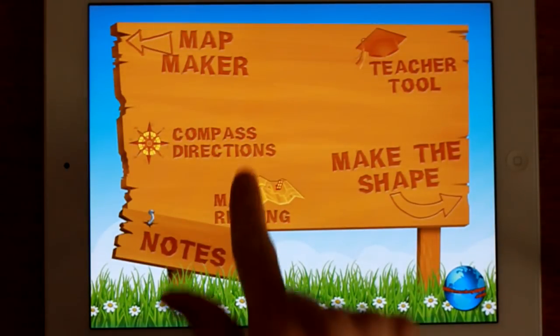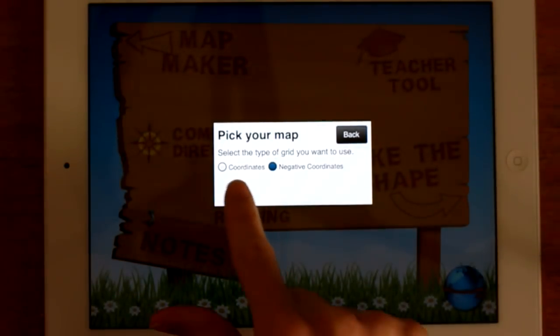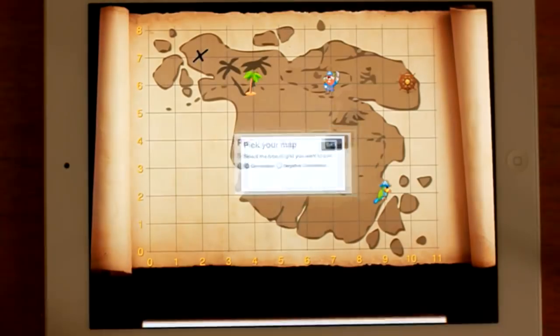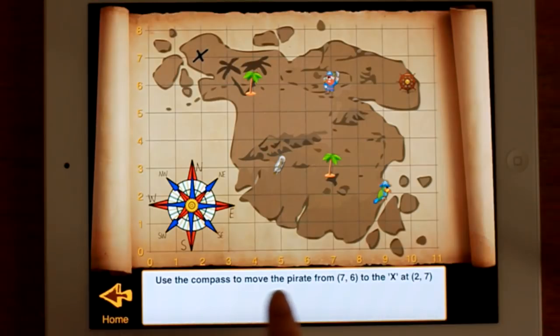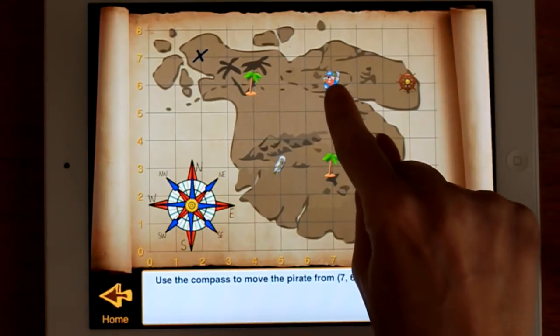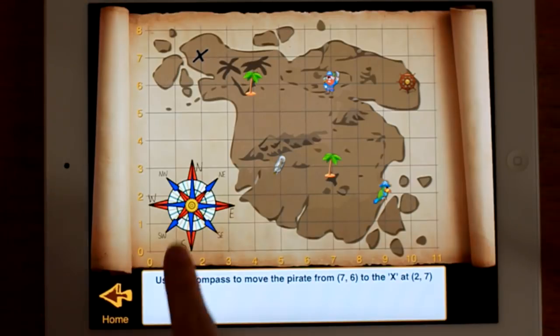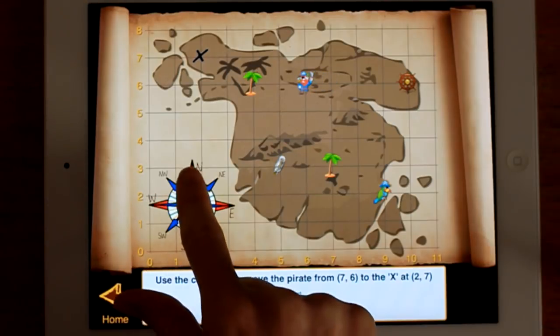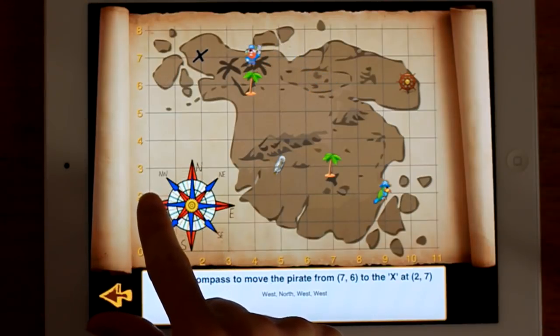Let's have a look quickly at compass directions. So you can choose coordinates or negative coordinates. Let's just choose coordinates for a sec. So you use the compass to move from 7,6 to the exit 2,7. So there's the pirate there. So we need to get to the X. So we can go west, north, west, west, west.